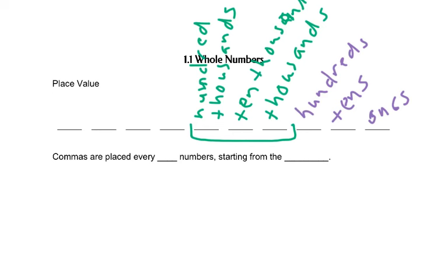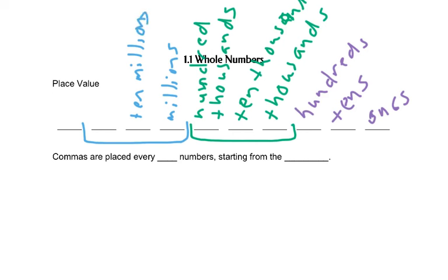And then we have another group of three, and again it repeats. This is the millions group, so it goes one million, ten million, hundred million. We don't usually write the one, so we say millions, ten millions, and then hundred millions.